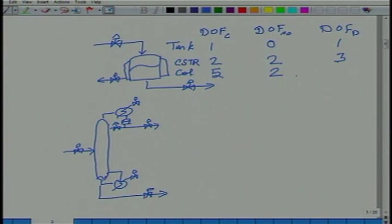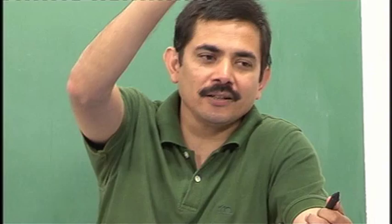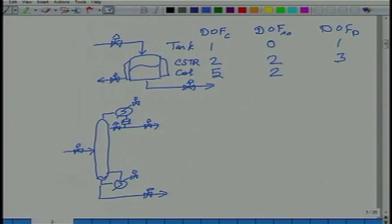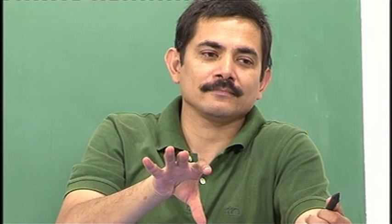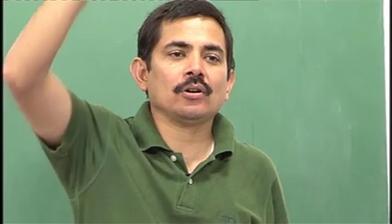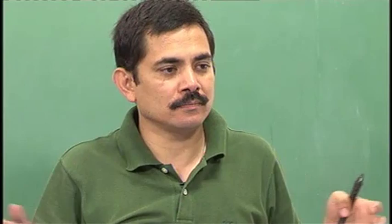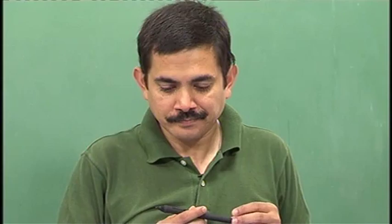That is when the column is already designed. When the column is not yet designed, height of the tower is plus 1. Tray spacing is typically standard — 2 feet, with 2 inches weir height. Feed point location matters: basically the number of rectifying trays and number of stripping trays. Why am I not counting the diameter as a design degree of freedom?